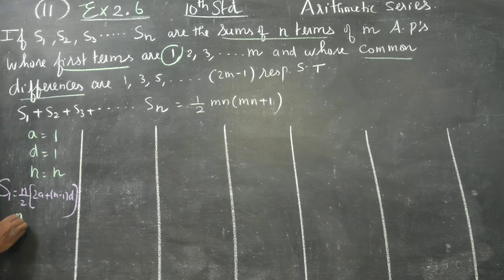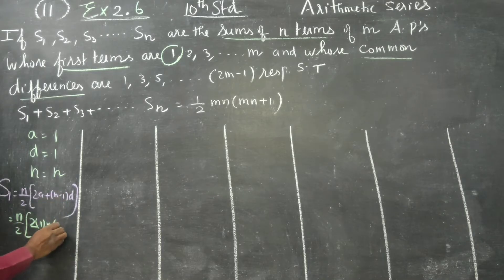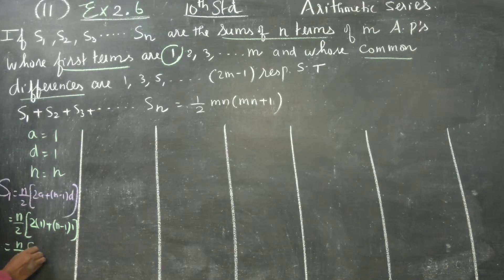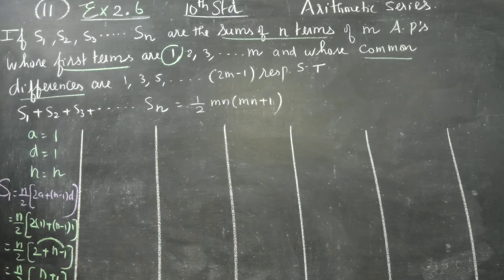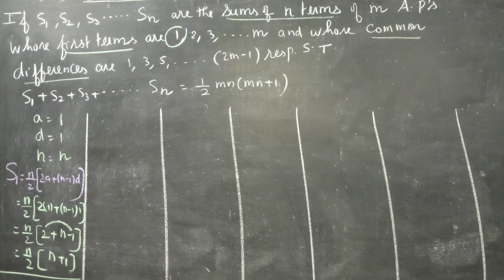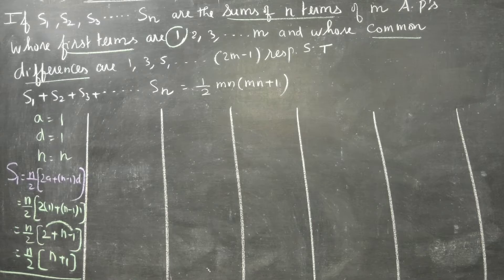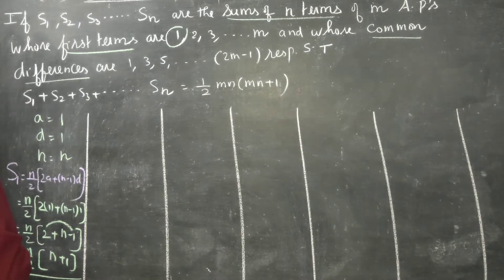Substituting a equal to 1 and d equal to 1: S1 equals n by 2 into 2 plus n minus 1, which gives n by 2 into n plus 1. So the first sum S1 is equal to n by 2 into n plus 1.